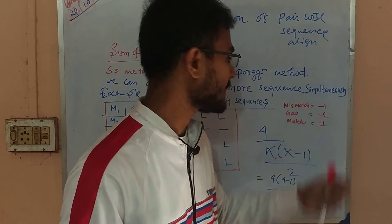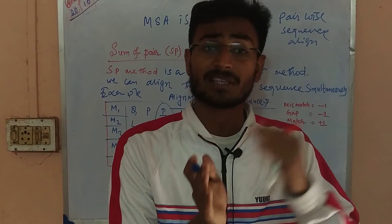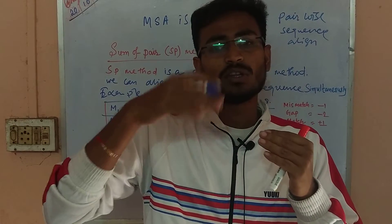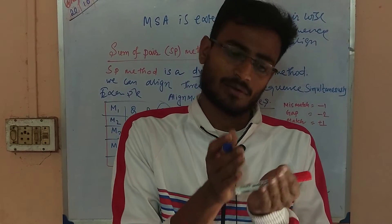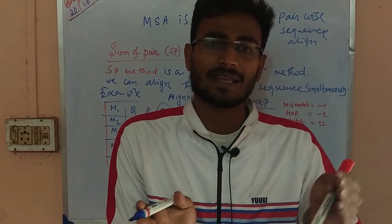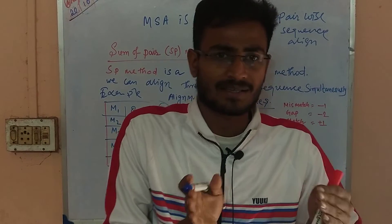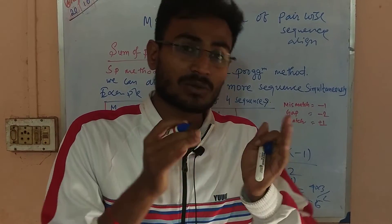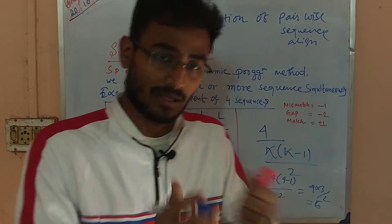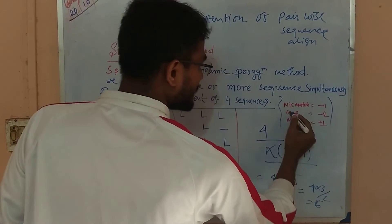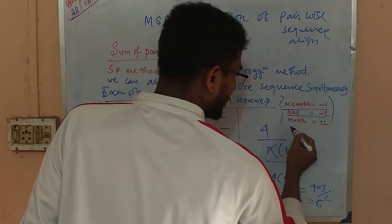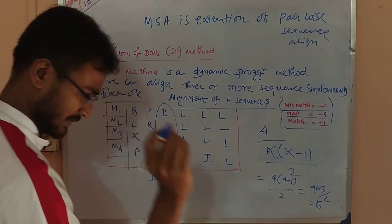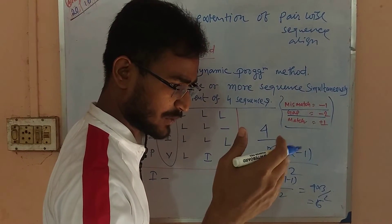Match means the residues in the aligned sequences are the same — for example, A and A will match. Mismatch means the residues differ. Gap means a blank position is inserted. A match gives a positive score, a mismatch gives minus 1, and a gap gives minus 2.